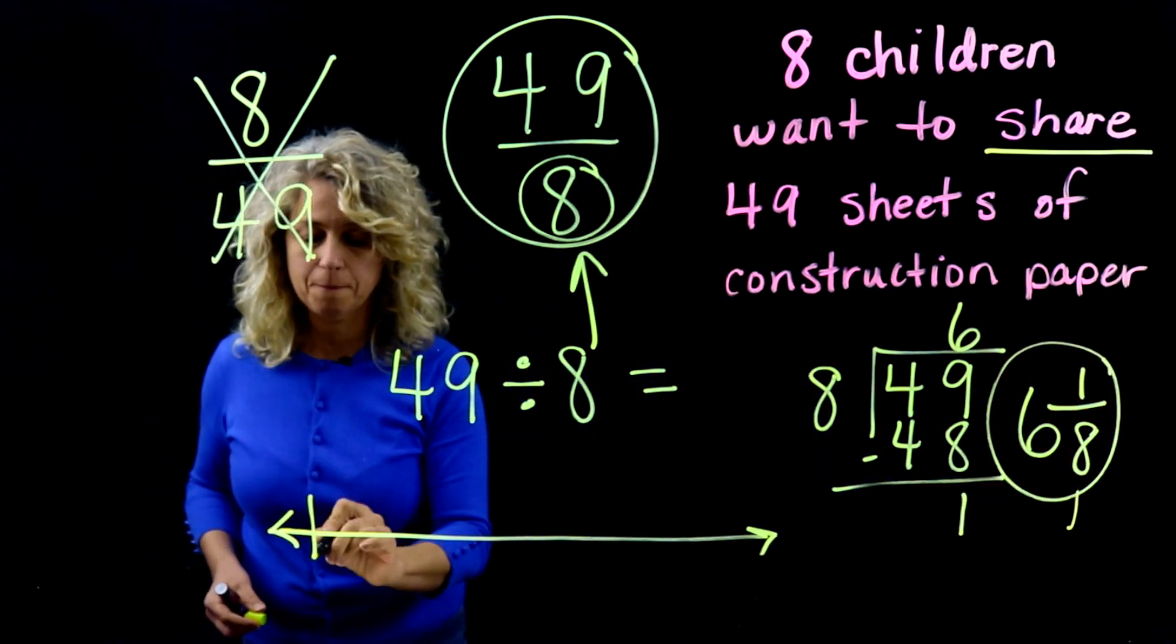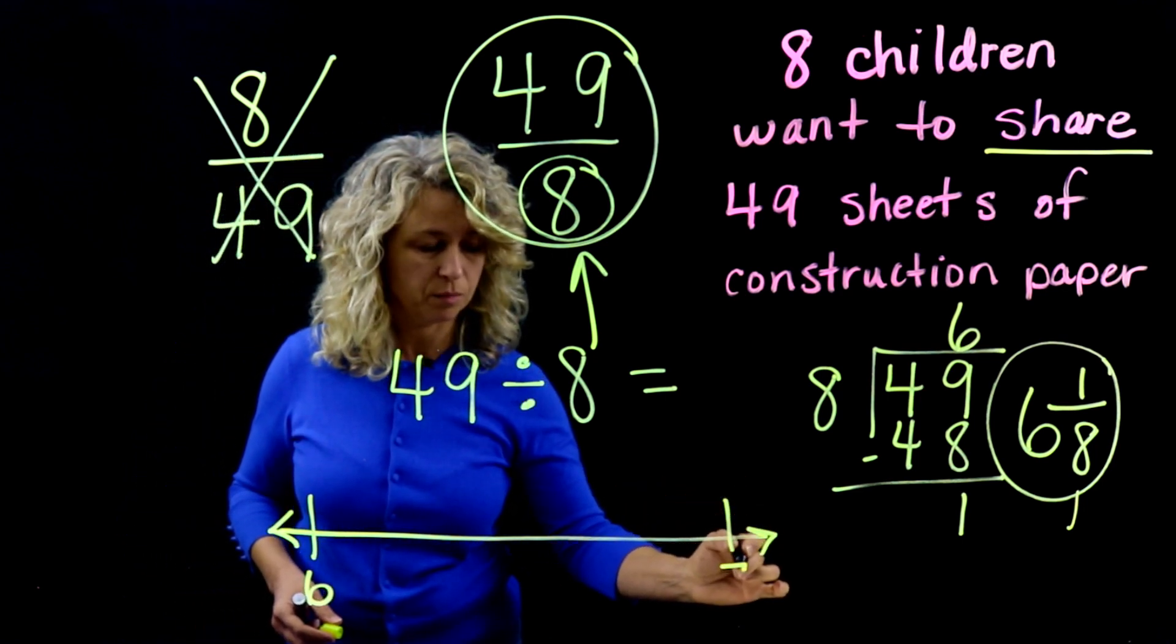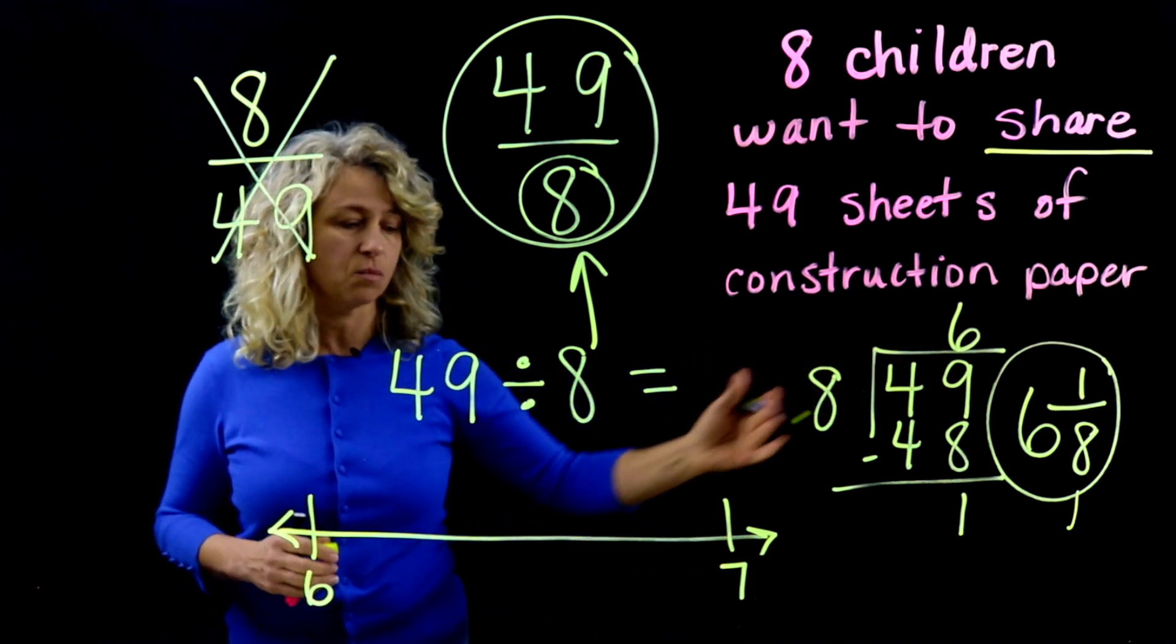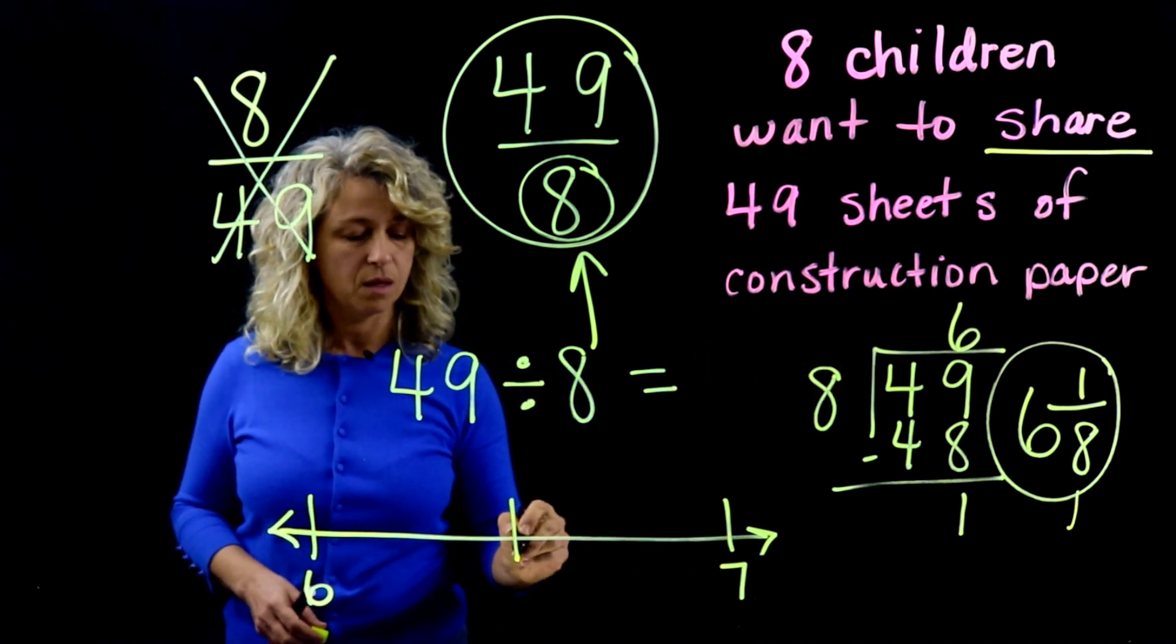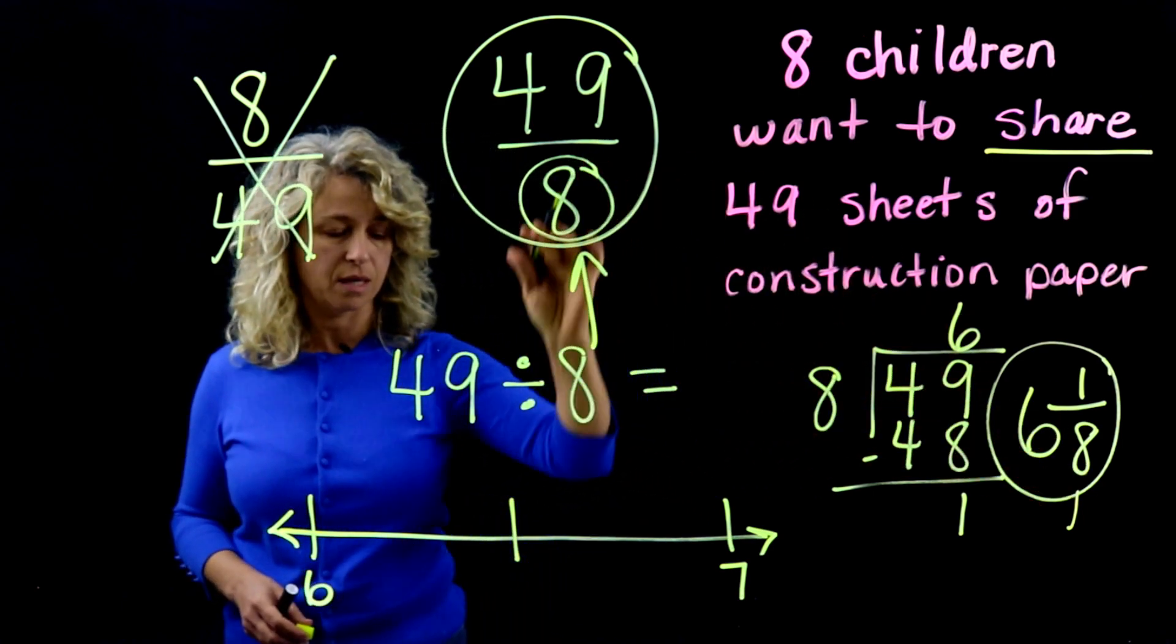Okay, so we can show this on a number line. Let's put a 6 here and let's put the whole number 7 here and show where the 6 and 1/8 would actually fall. Now we know that the denominator is going to be 8, okay, it stays the same.